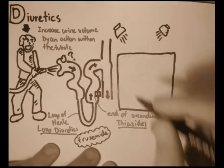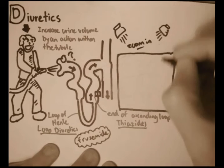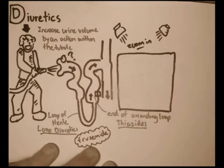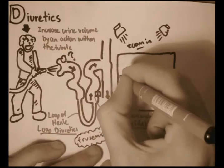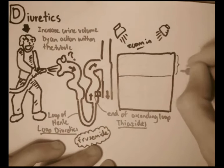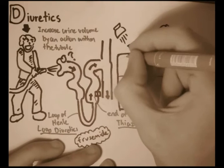So basically, on the very top, we find the lumen. On the top here, we find the lumen, the inside of the tubule. So this is the inside of the tubule.